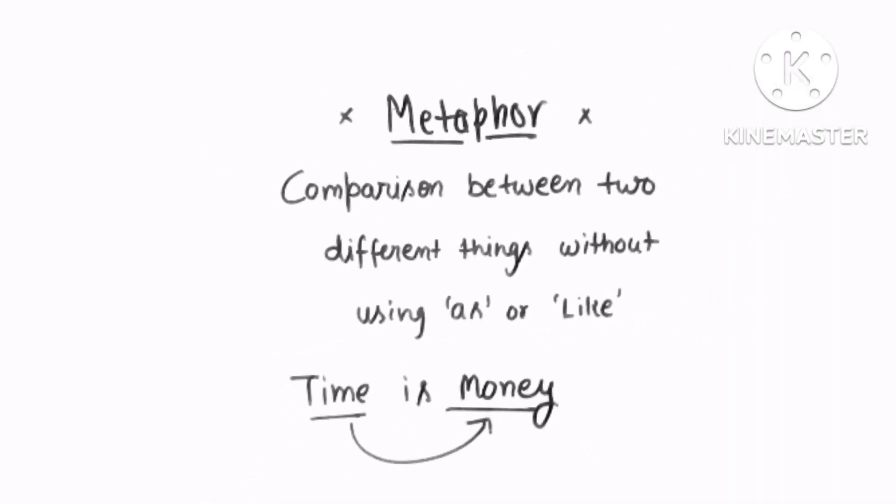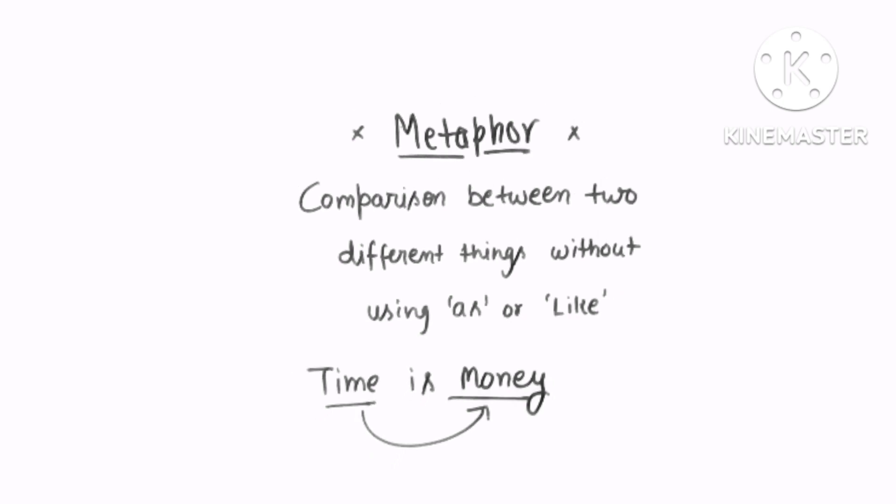A metaphor is a comparison between two different things without using 'as' or 'like.' If you use 'as' or 'like,' it will become a simile, so do not use them. For example, 'time is money' — here, time is compared to money.